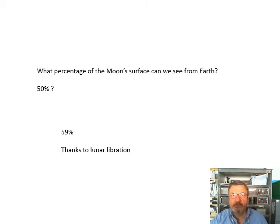What percentage of the Moon's surface can we see from Earth? You might think 50 percent because we can see half of it, but over a period of time we can actually see from Earth 59 percent. That's due to something called lunar libration.